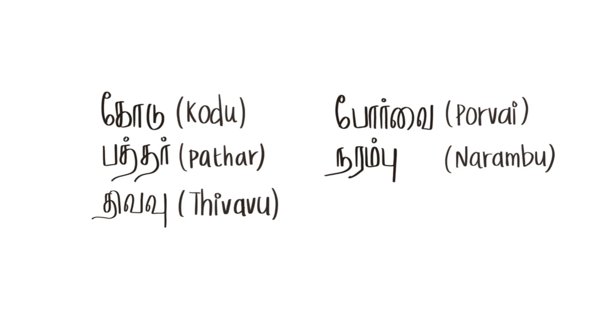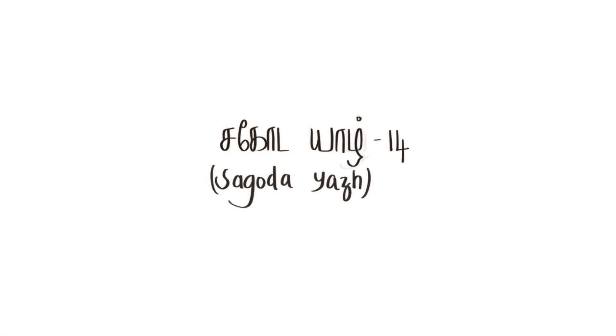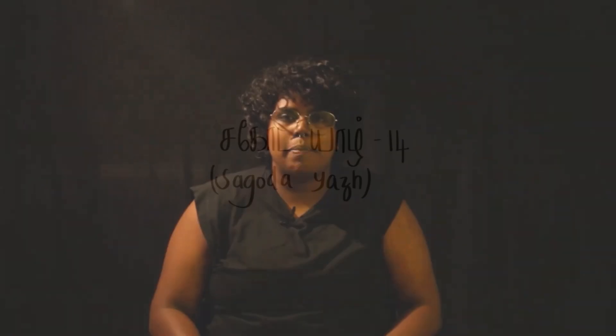In certain instances, cdr is also referred to as cdr — they are considered the same as both have seven strings. However, in certain texts it is mentioned as two different instruments, while in others it is considered the same. In Sirupanatra Padai, cdr is mentioned as having five different parts: kodu, patar, thivavu, poordai, and narambu.